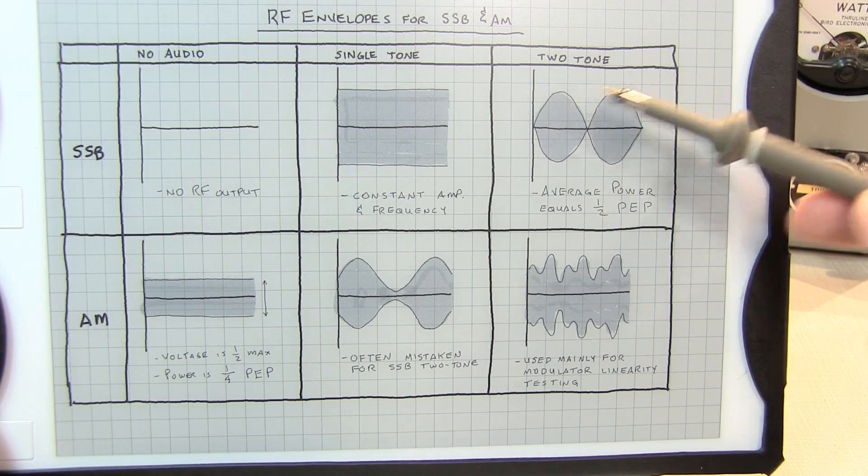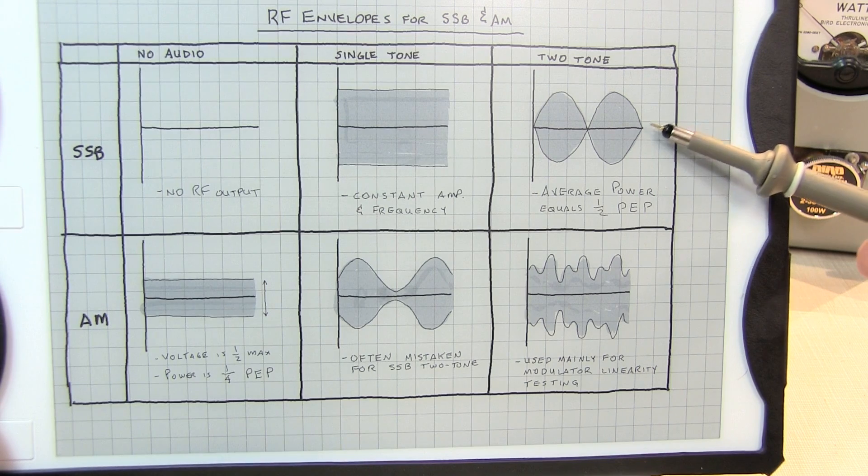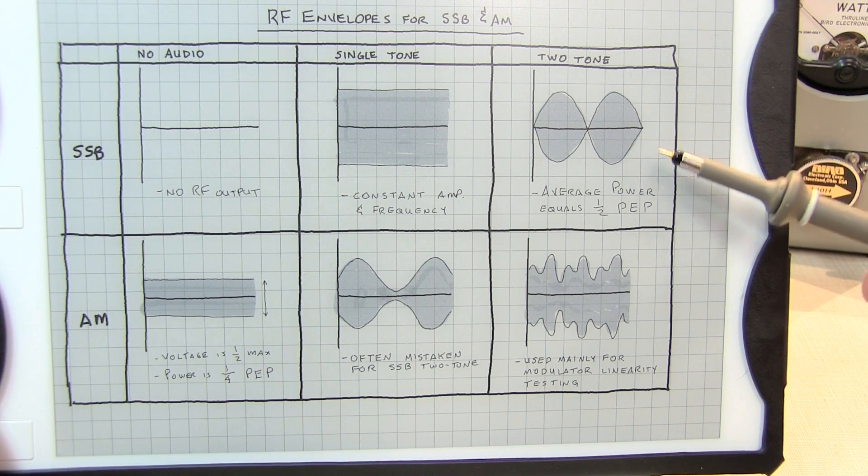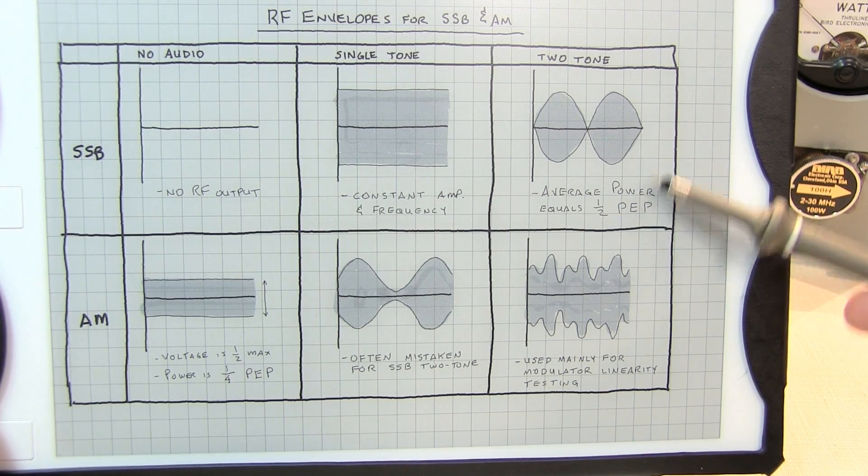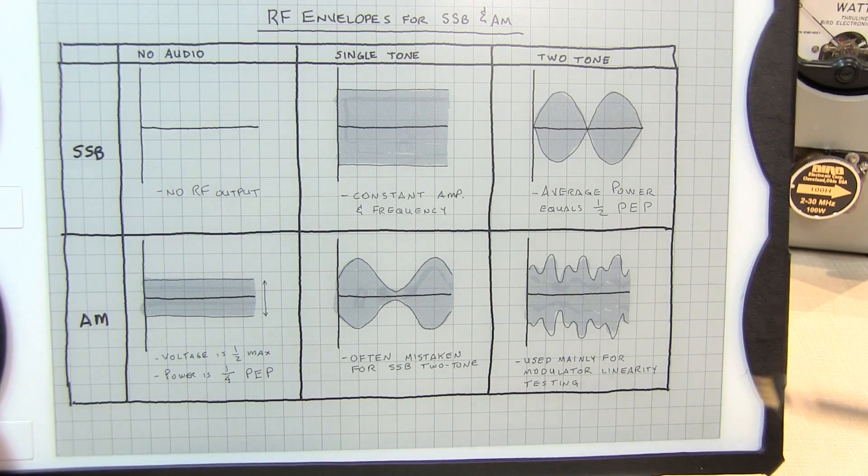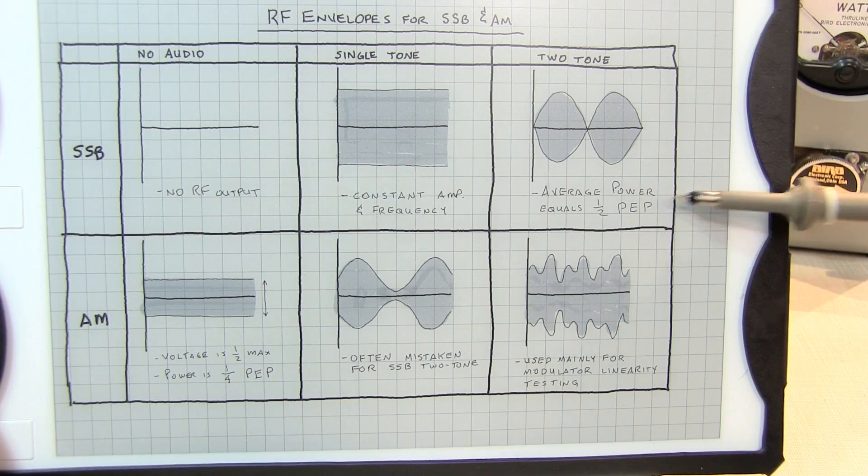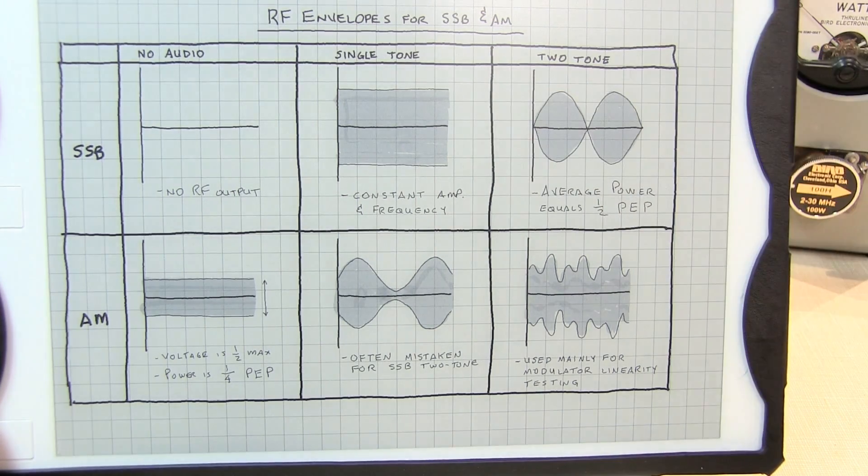One interesting property of the two-tone single sideband modulated signal is that if you measure the power with a typical average responding wattmeter like a Bird wattmeter, the average power reading will actually be equal to half of the peak envelope power. Just an interesting property and a nice way to be able to measure the peak envelope power of a single sideband transmitter without going to full 100% duty cycle.